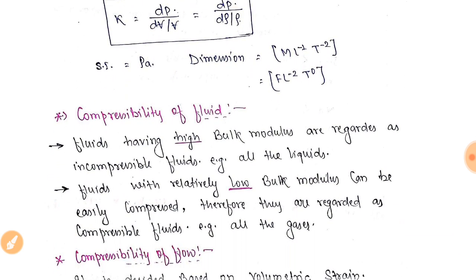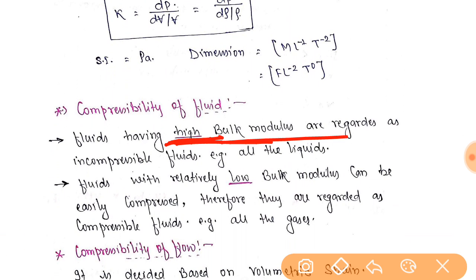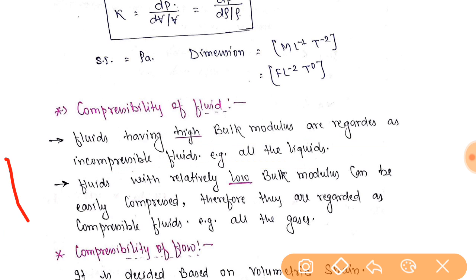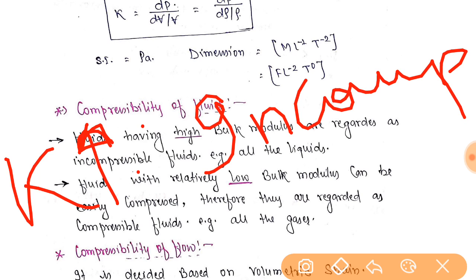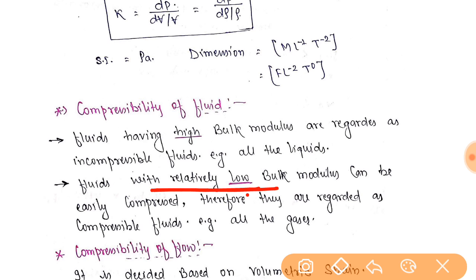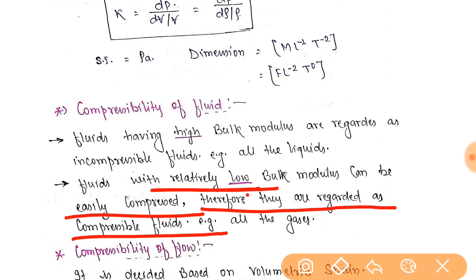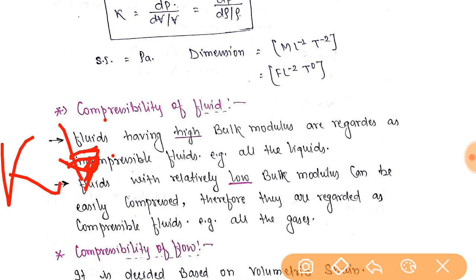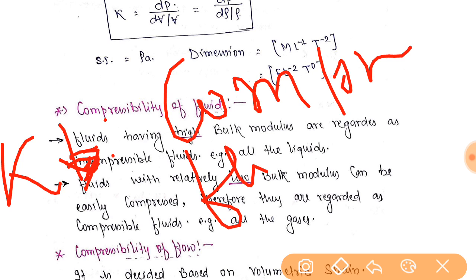Compressibility of fluid: fluids having high bulk modulus are regarded as incompressible fluids — that is, all liquids. So if K (bulk modulus) is very high, we call it an incompressible fluid. Fluids with relatively low bulk modulus can be easily compressed and are regarded as compressible fluids — for example, all gases. So if bulk modulus is relatively low, we call it a compressible fluid, meaning we can decrease its volume.